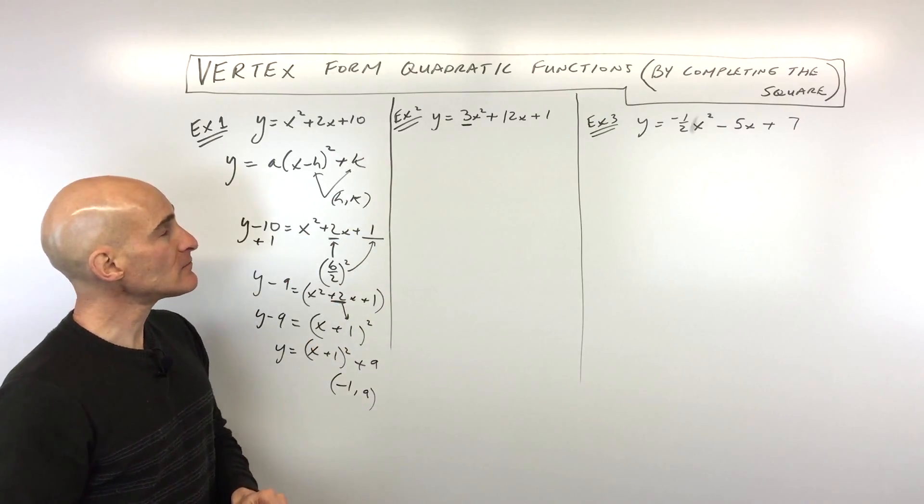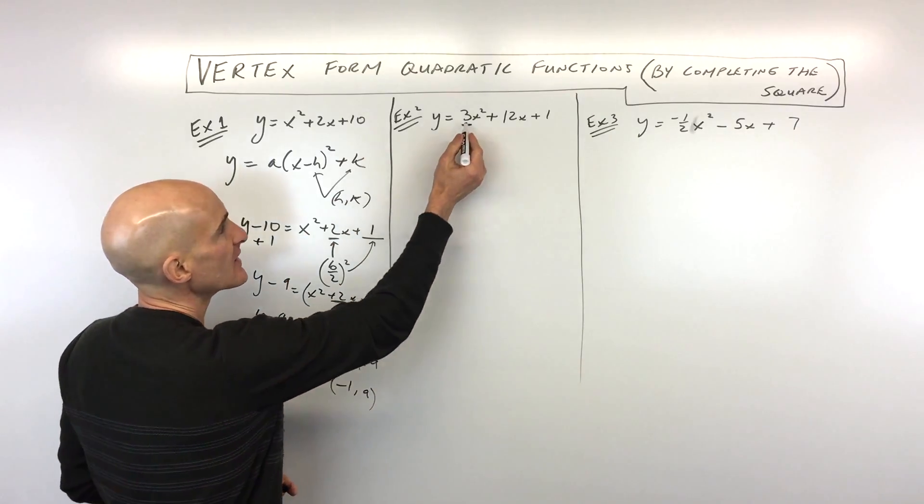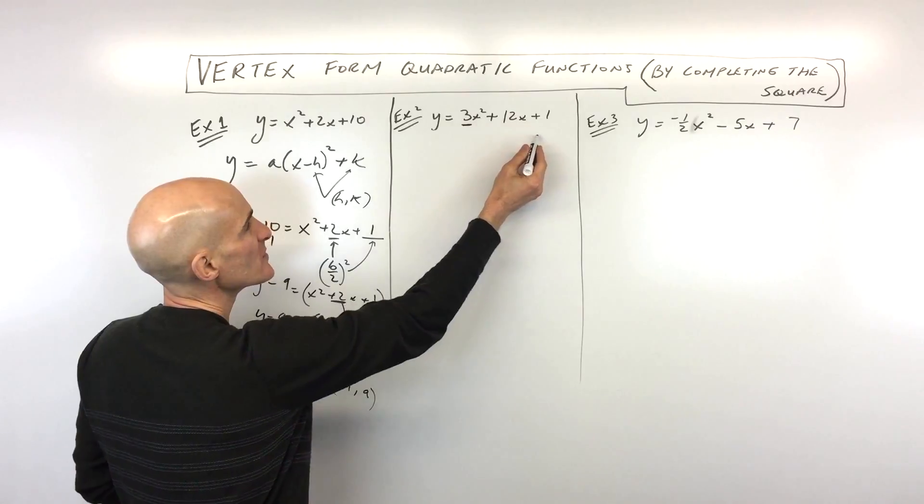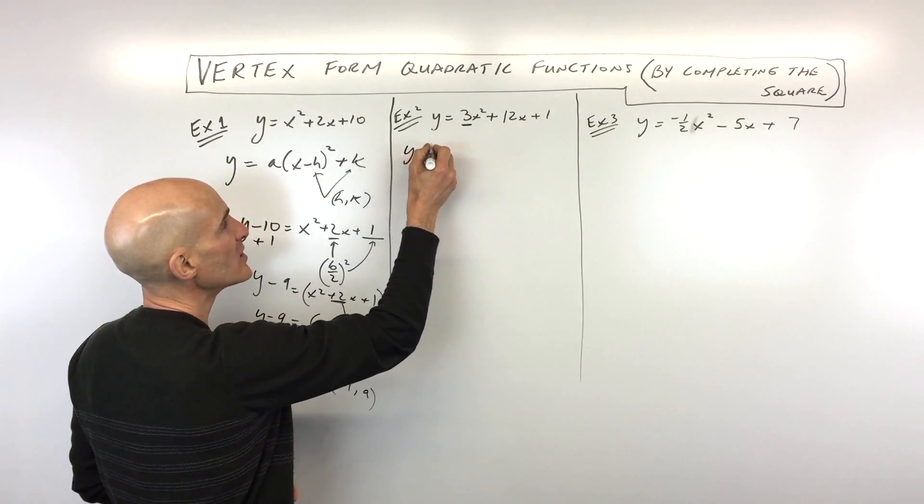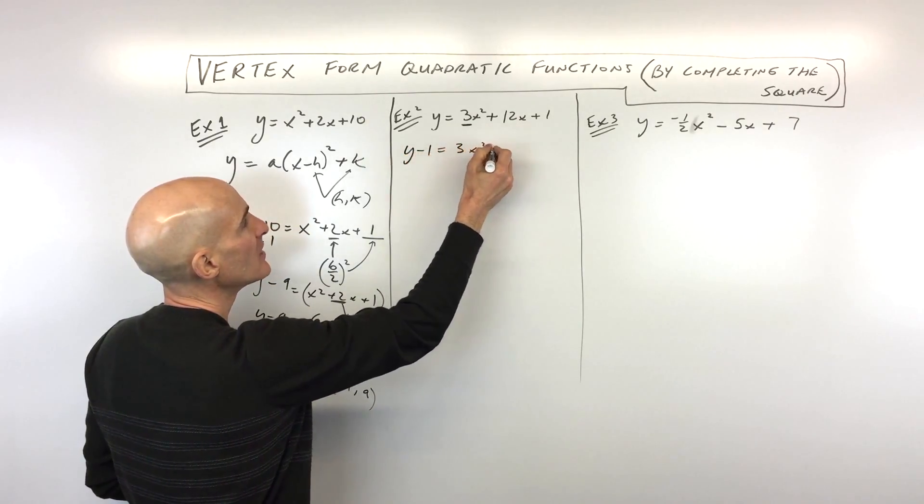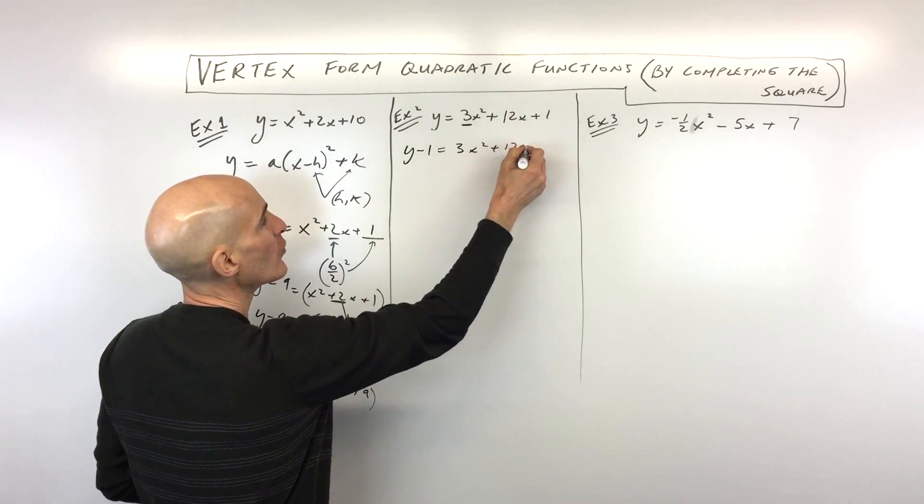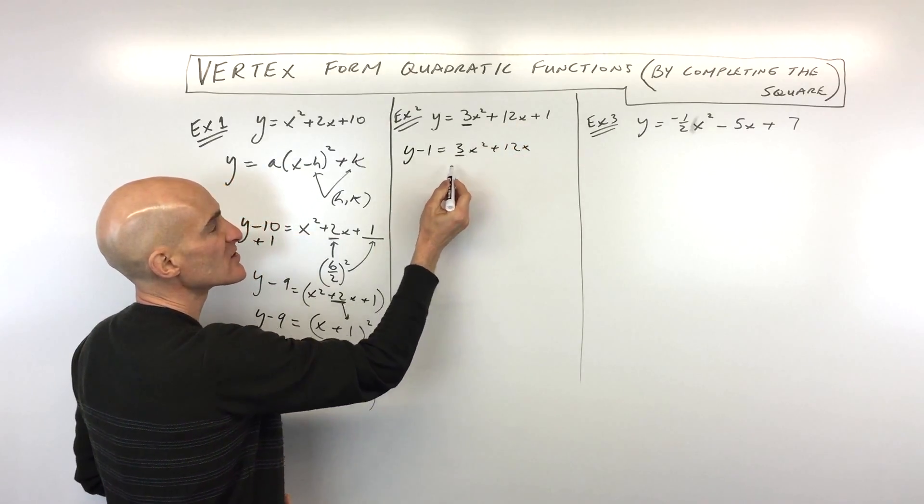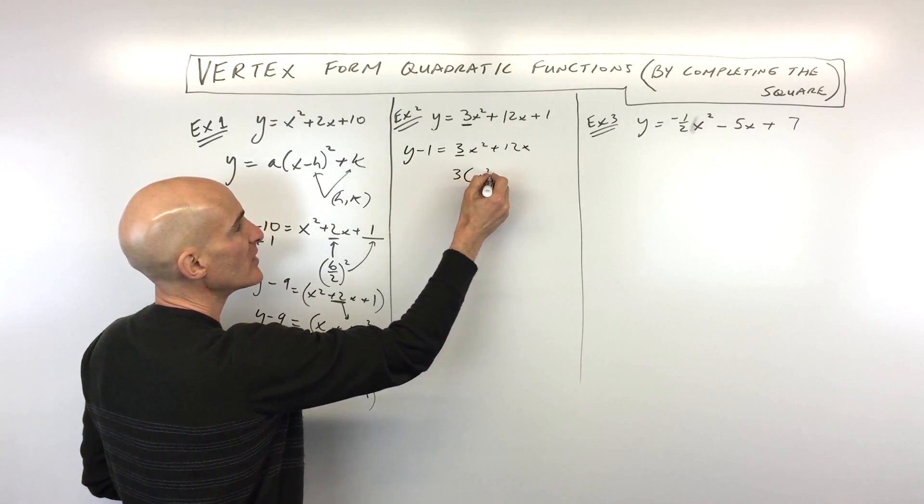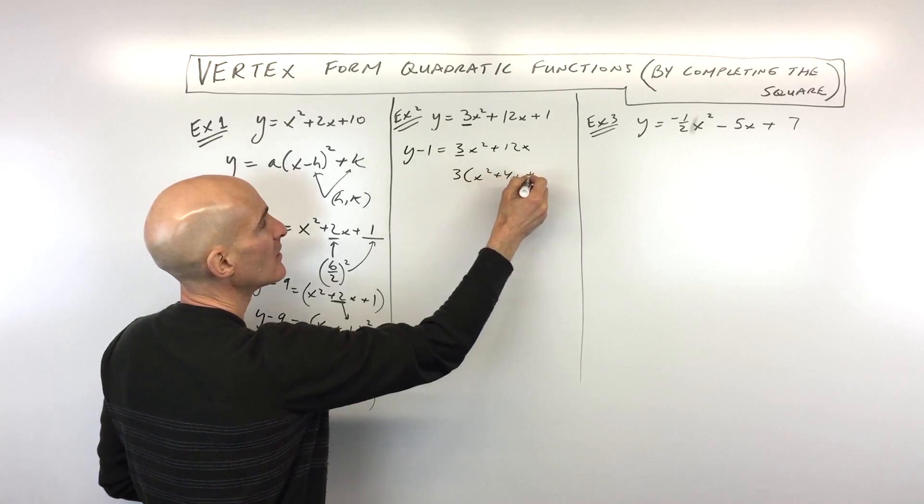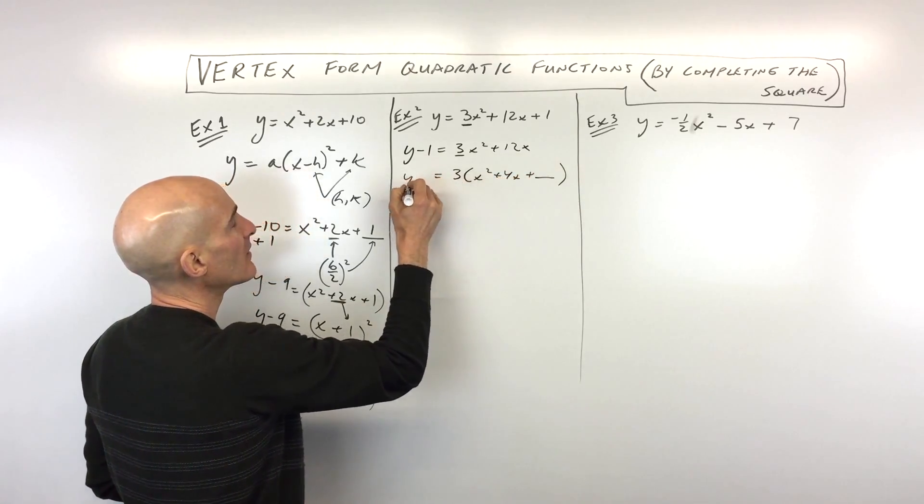So let's go to example number 2. So now this one's a little bit more challenging because of that leading coefficient of 3. What I'm going to do is I'm going to subtract 1 from both sides of the equation, just to get the 1 out of the way there. But then what we're going to do with this 3 is we're actually going to factor out the 3, like so.